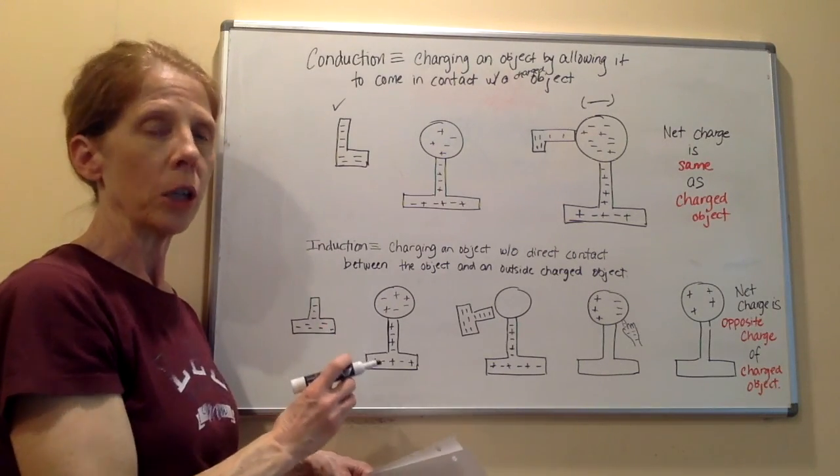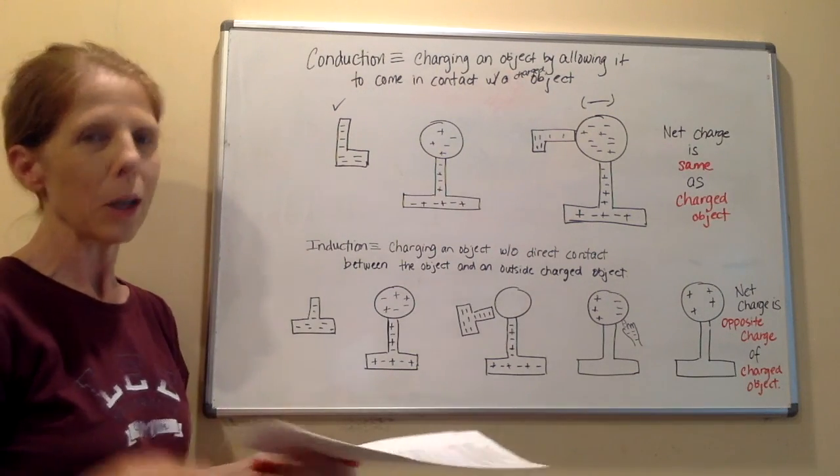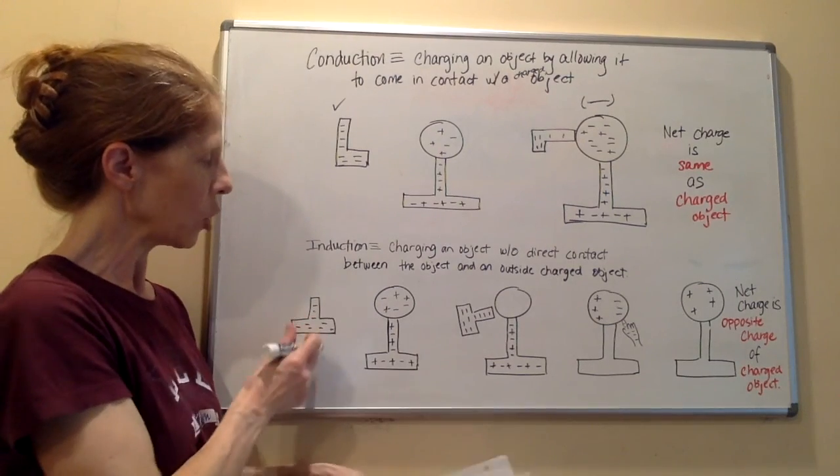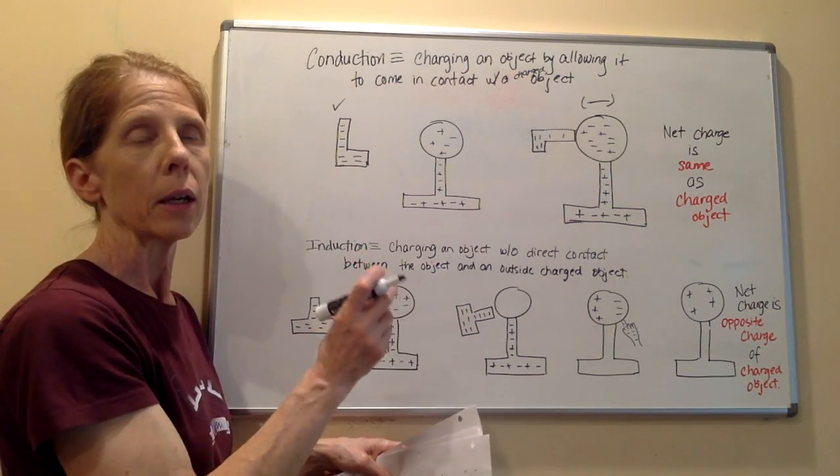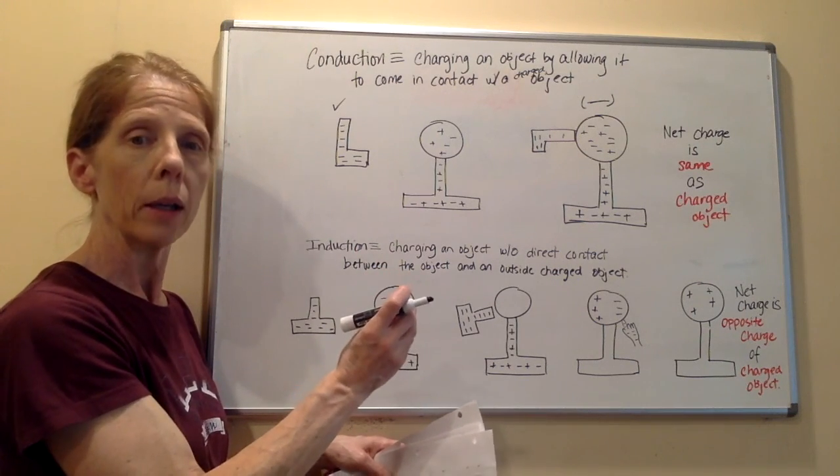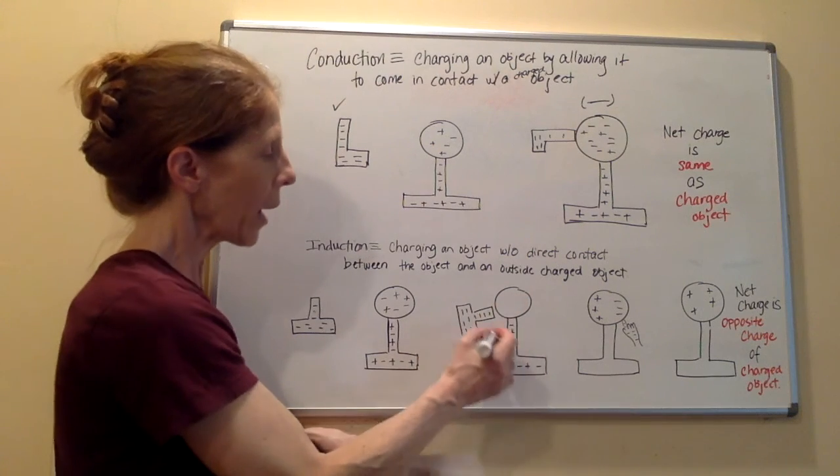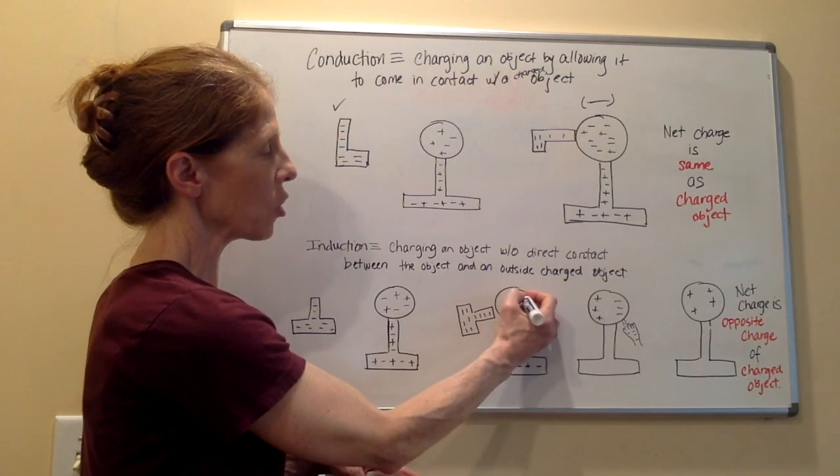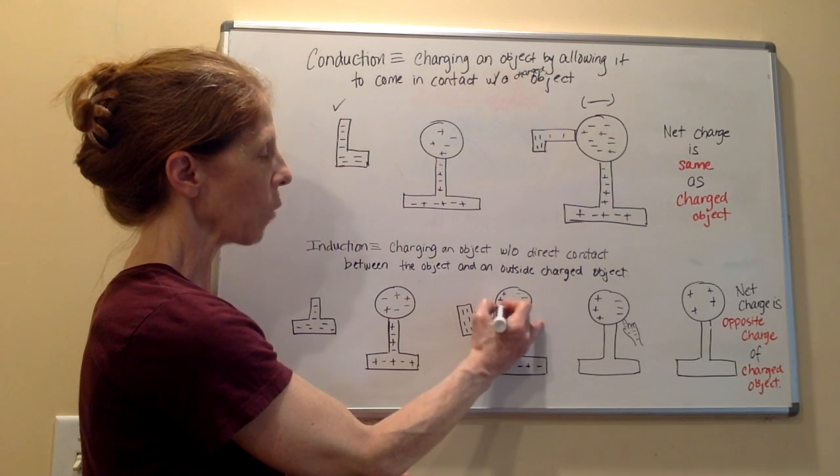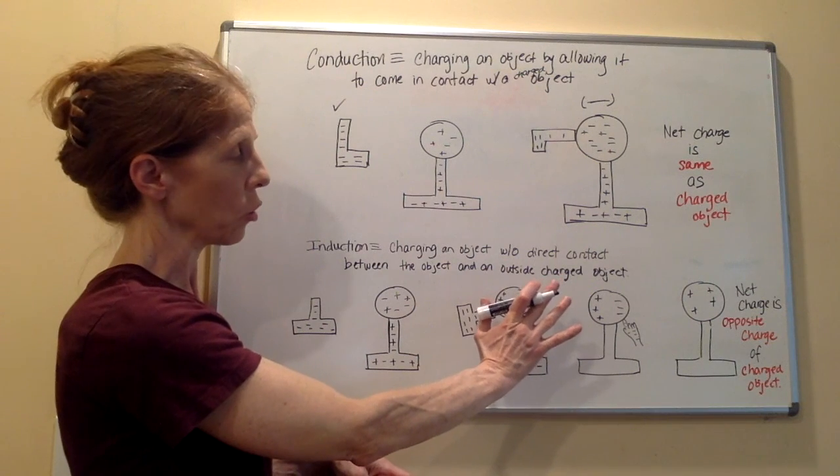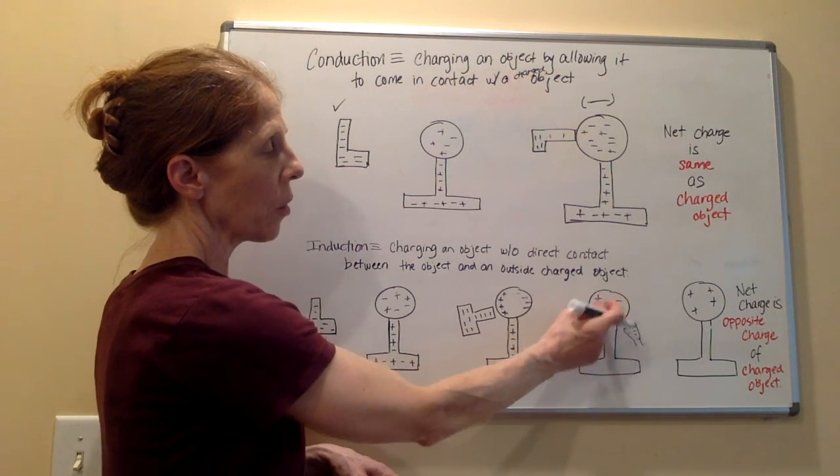Another way we can charge is through induction. The definition of that is charging an object without direct contact between the object and an outside charged object. We have a negatively charged object here, we have a neutral object here. We've talked before about what happens between like charges. Like charges repel. When I take this charged object and bring it close to, but not touching, this object, what happens is that the negative charges within this neutral object will move away from the negative charges of the charged object. And then the positive charges will stay over here and be closer. So it just separates the charges.